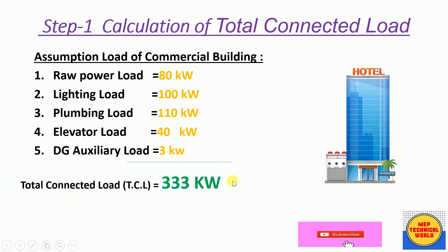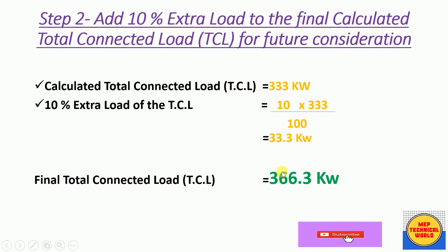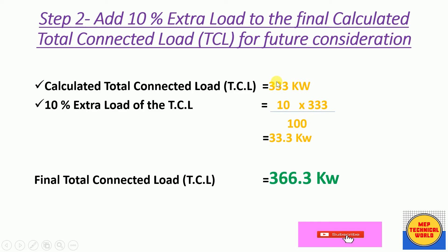In Step 2 we add 10% extra load to the total connected load for future consideration, because in the future the load may increase in various sectors. The total connected load calculated in the previous step was 333 kW. 10% of 333 kW = (10 × 333) / 100 = 33.3 kW. So the final total connected load (TCL) = 333 + 33.3 = 366.3 kW.